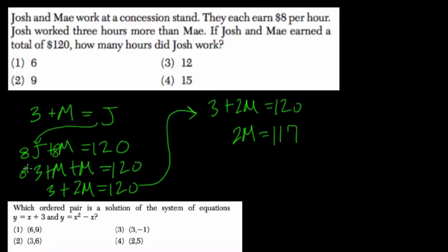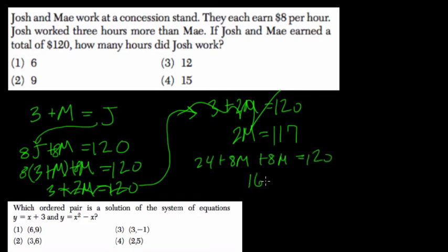So that means 8 times 3 plus M plus 8 times M. We're substituting still. 8 times 3 plus M is 24 plus 8M distributed, plus another 8M equals 120. This is 16M. And then let's subtract 24 from 120, we get 96.